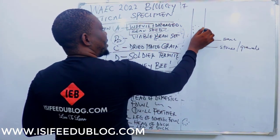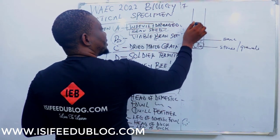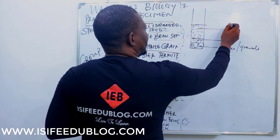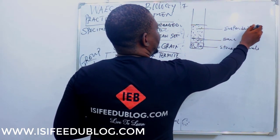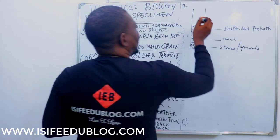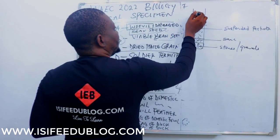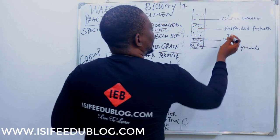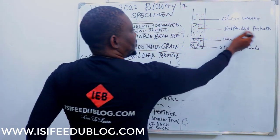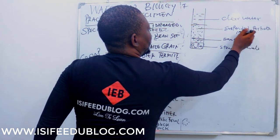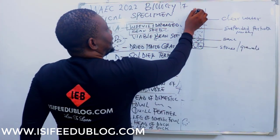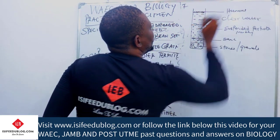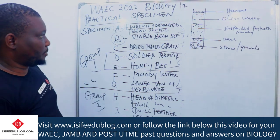Above the sand there will be suspended particles of sand — suspended particles. Above that we have clear water, and above the clear water it will be muddy — muddy water. And at the very top of the test tube you will not see humus.